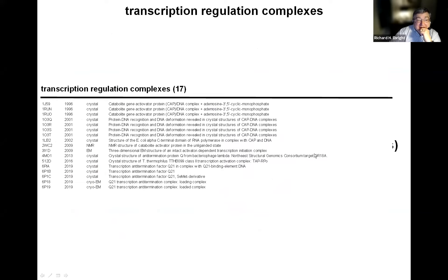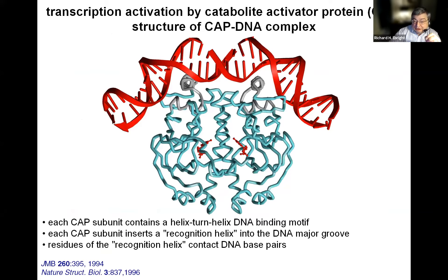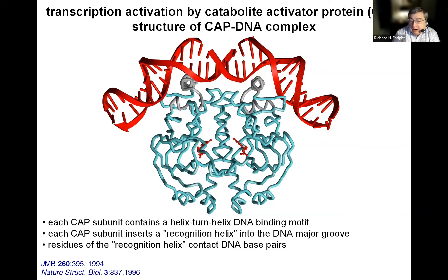Turning to transcription regulation complexes: in 1996, our first PDB entry was made from a structure determined by a joint project between our laboratory and the laboratory of Helen Berman at Rutgers. Three years earlier, Tom Stites and co-workers had reported a structure of the activator protein CAP bound to its DNA site—the classic textbook example of a transcription activator that activates transcription at the lac promoter in E. coli. Unfortunately, the resolution was not sufficient to unambiguously define individual amino acid-based contacts between CAP and its DNA site. Our laboratory engineered a DNA site sequence and structure that enabled complex formation with two orders of magnitude higher affinity.